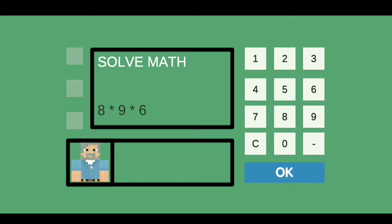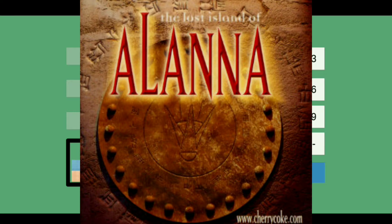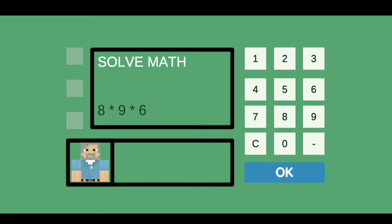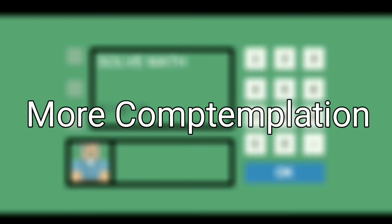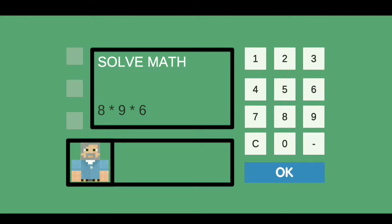I got a pen, though. I found the back of an old PC game — what is this? The Lost Island of Alana? By Cherry Coke? What the heck? Well, I can use the back of this. Alright, boys, it's big brain time. Carry the one. 432. Take that.